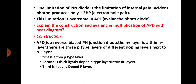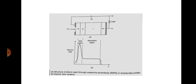The avalanche photodiode is a reverse-biased PN junction diode. The n-plus region is a thin n-plus layer, and there are three p-type layers of different doping levels situated next to it. The first layer is a thin p-type layer, the second is a thick and lightly doped p-type layer that acts as an intrinsic layer, and the third is a heavily doped p layer. The intrinsic region is thick and has very small doping concentration, so it acts essentially as an intrinsic material.